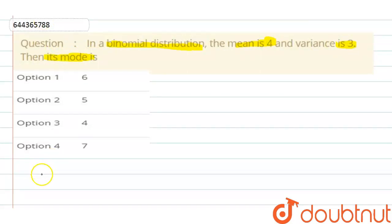So basically in binomial distribution mean is basically np and variance is basically npq. So basically np is given as 4 so we can write here as 4 and npq is given as 3. So from here we can say that let's suppose this is our equation number 1 and equation number 2.